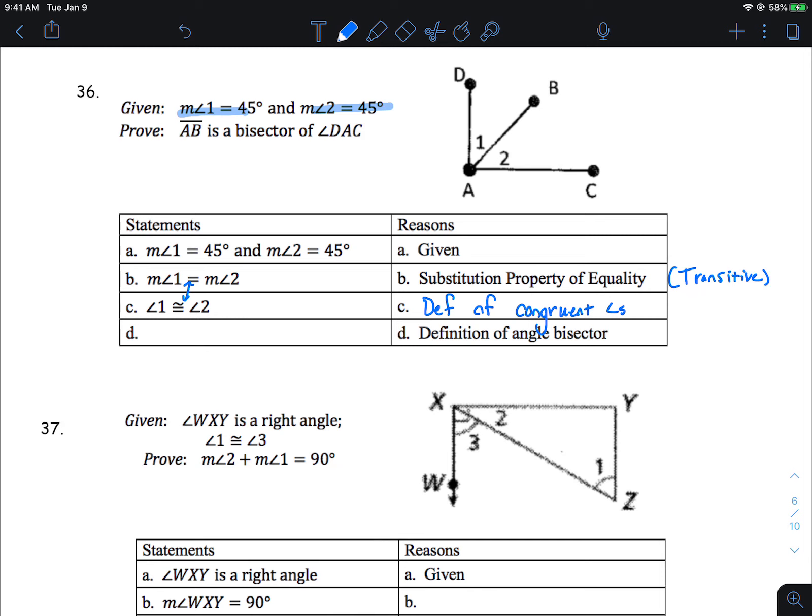Okay. And then if one is congruent to two, that means this line here is actually a bisector, which is actually the last line. Anything you're trying to prove, I'll give you a hint, always goes there in that last line. This will be segment AB is a bisector of angle DAC. And how do we know that? We already established that they're equal, and we would put definition of angle bisector for that right there.